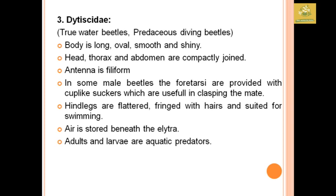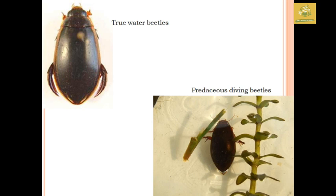The family Dytiscidae comprises true water beetles and predaceous diving beetles. The body is long, oval, smooth, and shiny. Antennae are filiform. Hind legs are flattened and fringed with hairs, mainly suitable for swimming. Air is stored beneath the elytra for respiration purposes. Both adults and larvae are aquatic predators.